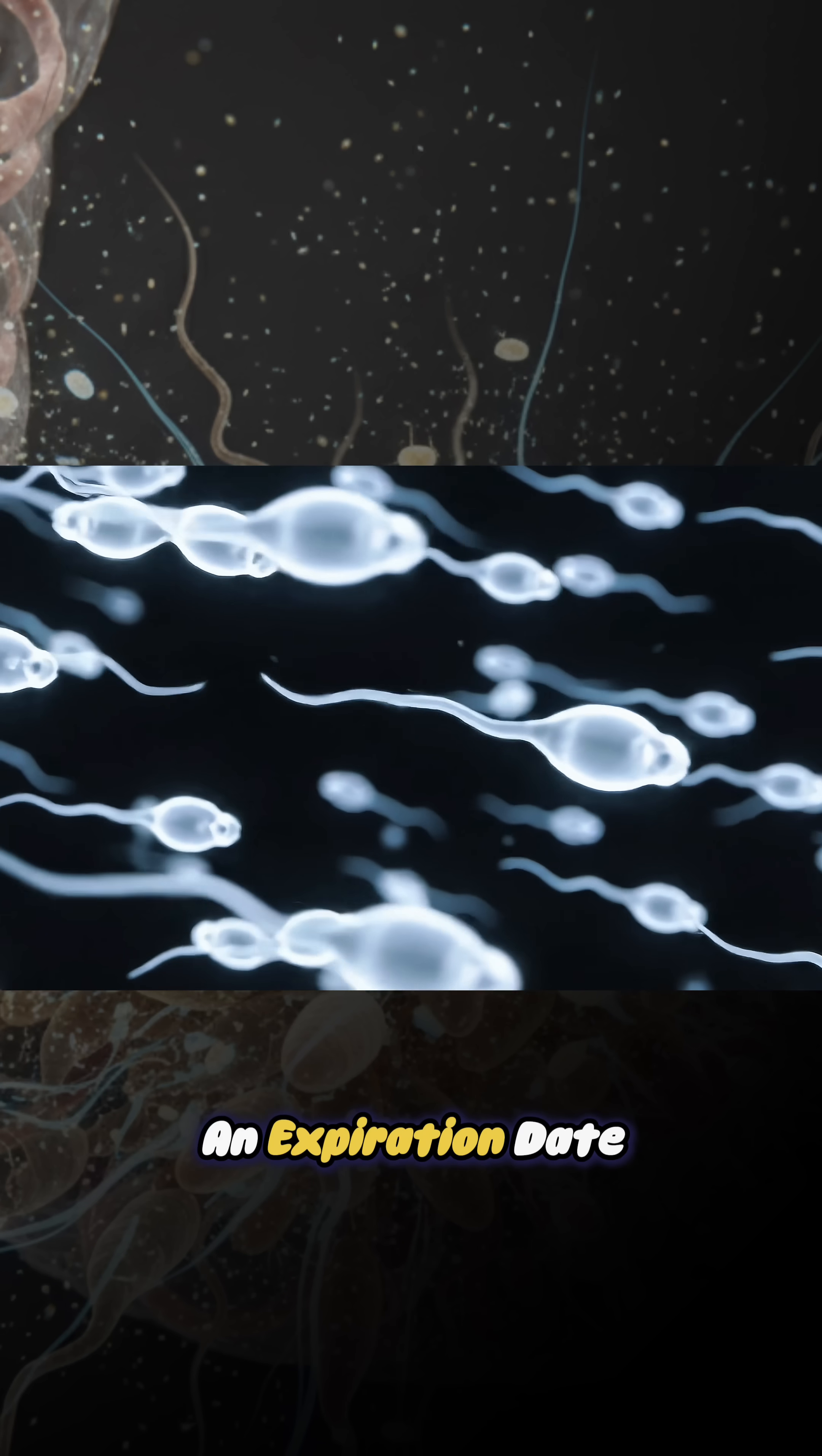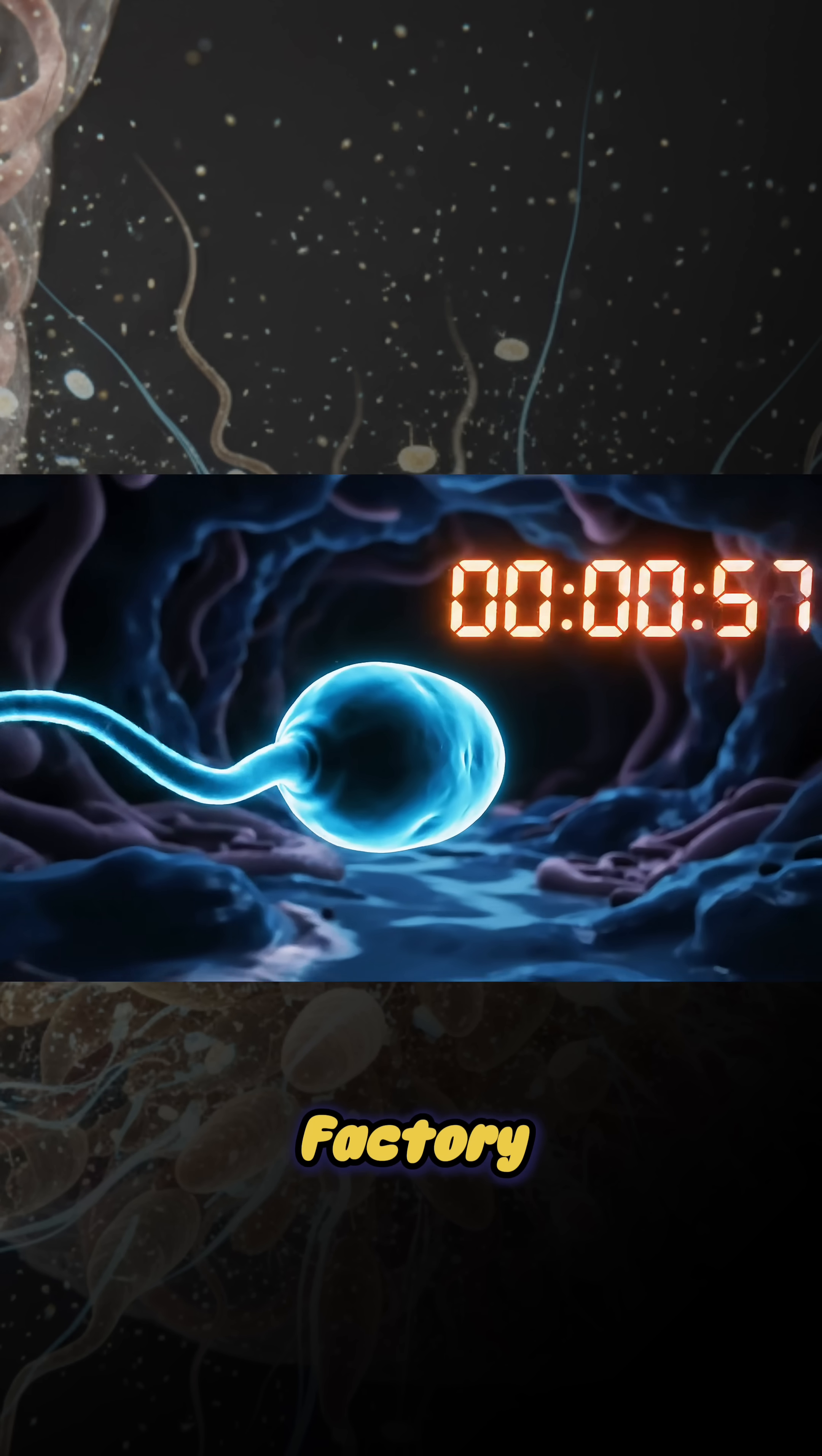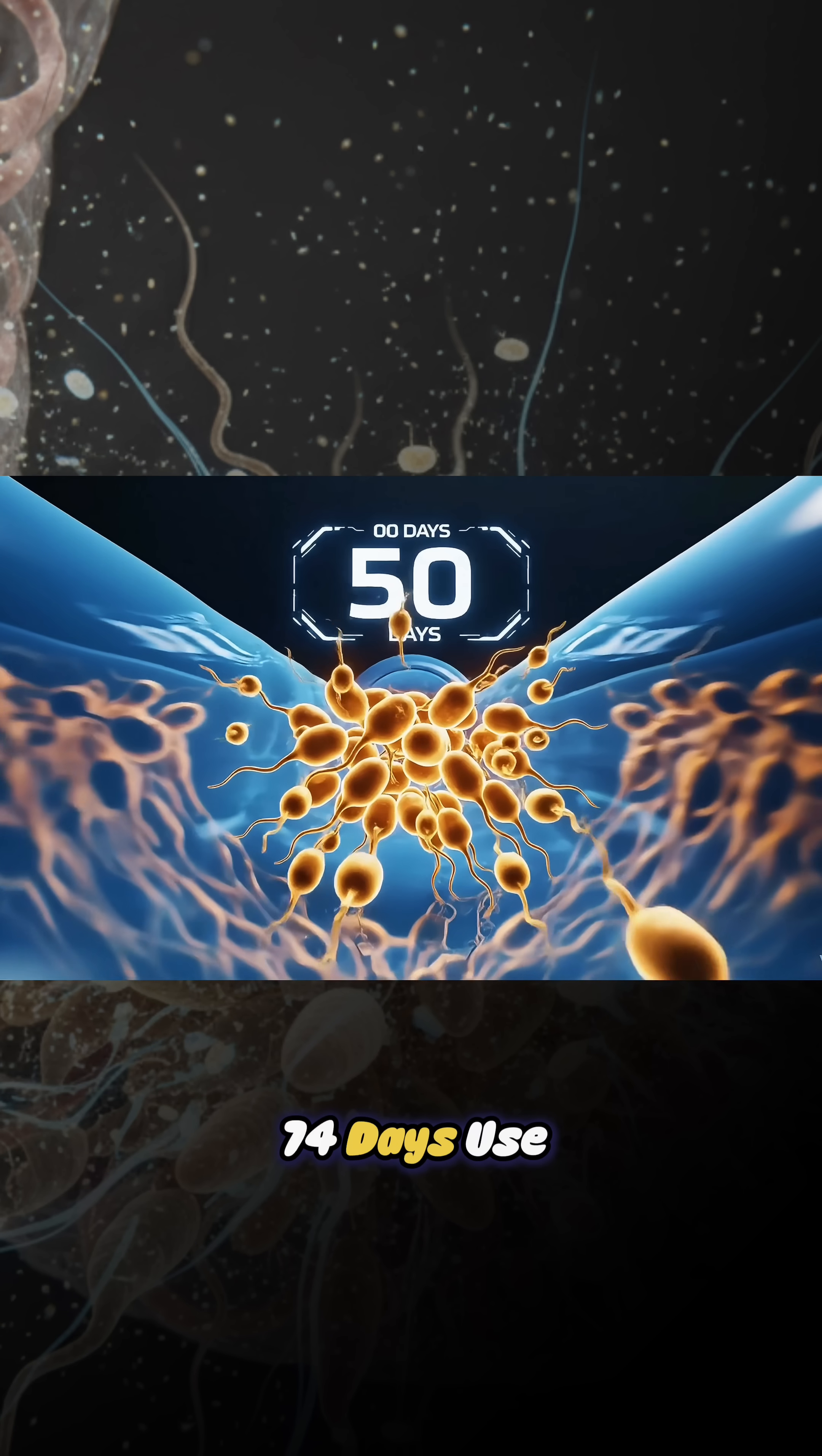Your sperm has an expiration date, and the clock starts the moment it's made. The second your sperm leaves the factory, the countdown to its death begins. And each batch has a strict countdown: 74 days.